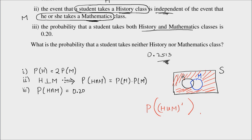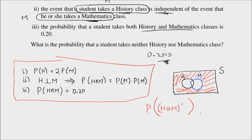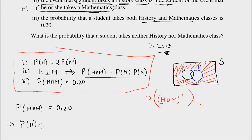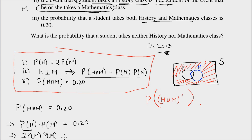Before I do that, let me use the three given pieces of information to find the probability of H and the probability of M. From number three, I have the probability of H ∩ M equal to 0.20. From number two, I know the probability of H ∩ M is the product, so this implies P(H) times P(M) equals 0.20. From number one, I have P(H) equal to twice P(M). So I can substitute P(H) by 2·P(M), giving 2·P(M) times P(M) equals 0.20.